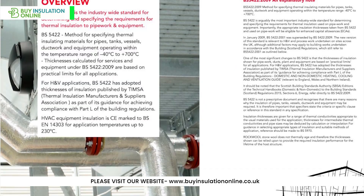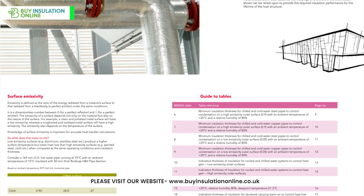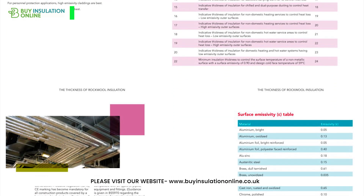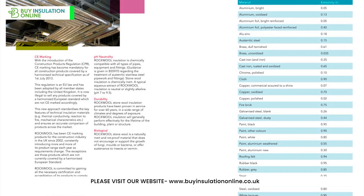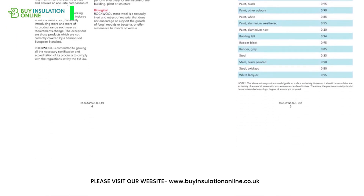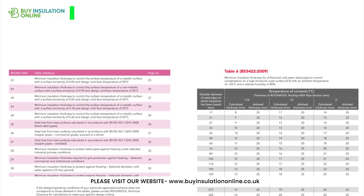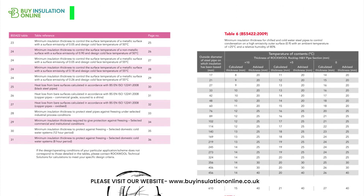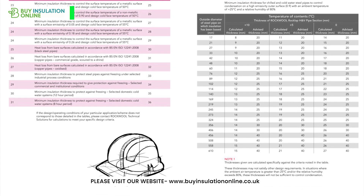British Standard 5422 plays a key role in decisions surrounding pipe insulation thickness. This standard provides guidelines for thermal insulating materials for pipes, tanks, vessels, ductwork and equipment operating in the temperature range of minus 40 degrees Celsius to plus 700 degrees Celsius. Following this standard ensures we are operating within acceptable guidelines for effectiveness and efficiency.